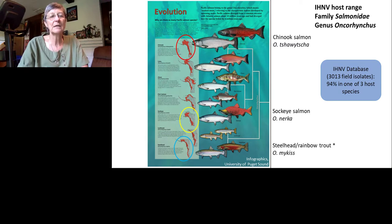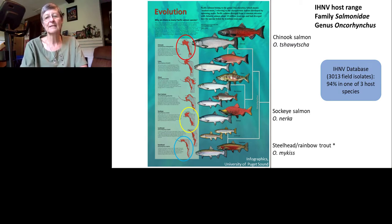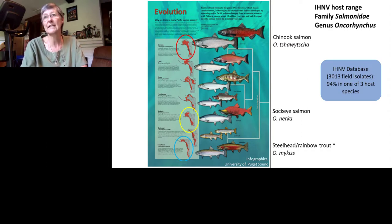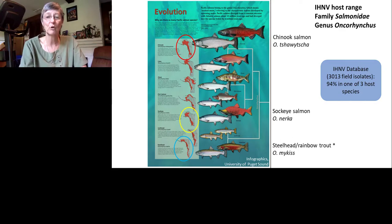The three dominant hosts are Chinook salmon, sockeye salmon, and steelhead or rainbow trout. I would note that steelhead and rainbow trout are the same species, Oncorhynchus mykiss. The difference is that steelhead migrate to the ocean and grow very large, while rainbow trout stay in freshwater and are the focus of an intense global aquaculture industry.